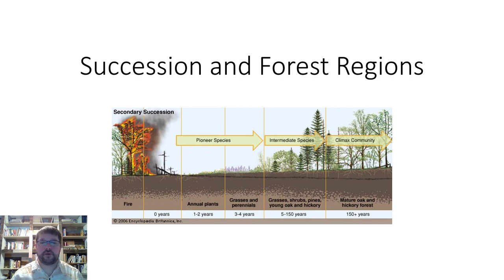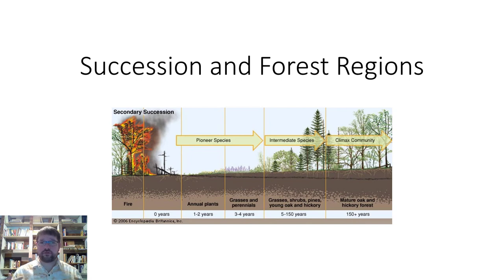Dr. Clark here again for forest management. This lecture we're going to talk about succession and forest regeneration. We're going to go through the types of succession — succession is basically the stage at which a forest is after a natural disaster. It doesn't actually have to be a natural disaster; it could be a man-made disaster where we've clear-cut a forest, burned it, or just clear-cut it.